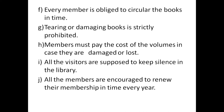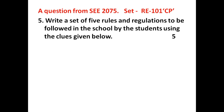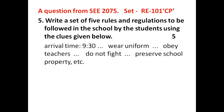Now let's take an example from the SEE questions — specifically from the 2075 SEE, set RE-010CP. The question says: 'Write a set of five rules and regulations to be followed in the school by the students using the clues given below.' The clues are: arrival time 9:30; wear uniform; obey teachers; do not fight; and preserve school property.